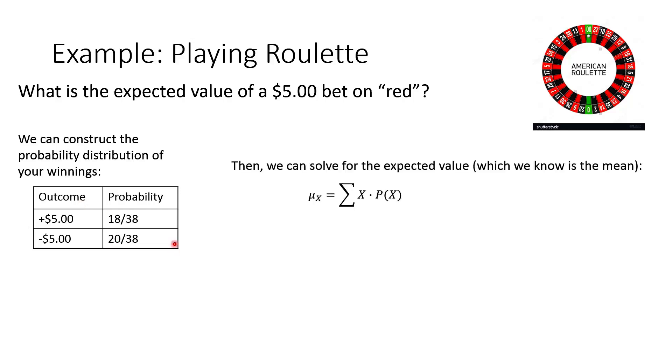So once you have the probability distribution constructed, then we can actually calculate the expected value because it's just another name for the mean. So I want to calculate the mean of this random variable. I'll just take each outcome times its probability. So we have a positive $5 with an 18 out of 38 chance, plus a negative $5, that's a $5 loss, with a 20 out of 38 chance. And if you add those up, you should be able to come up with an expected value of about a $0.29 negative value.